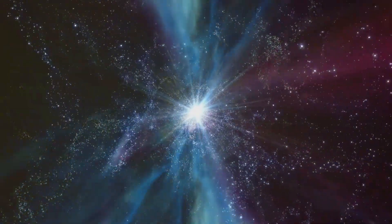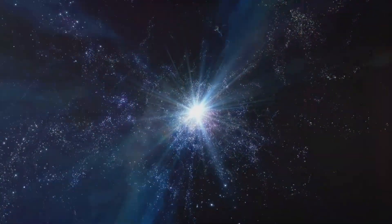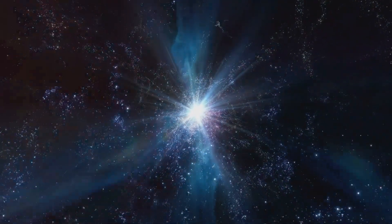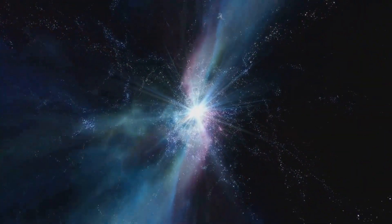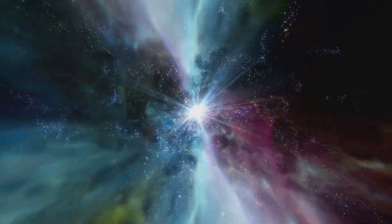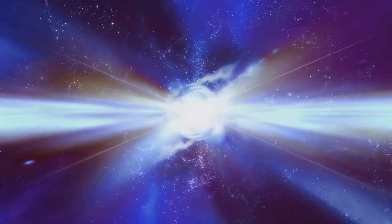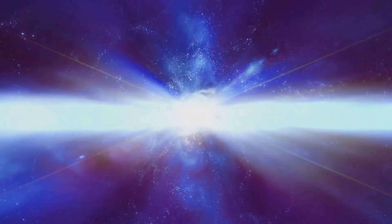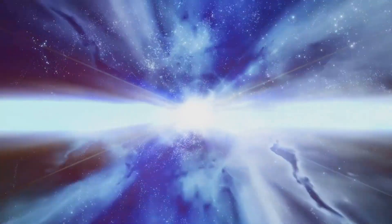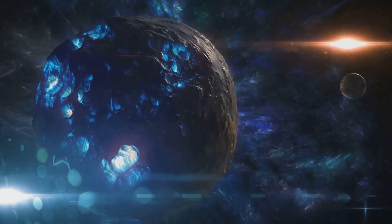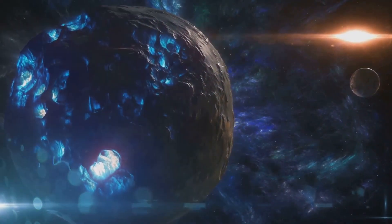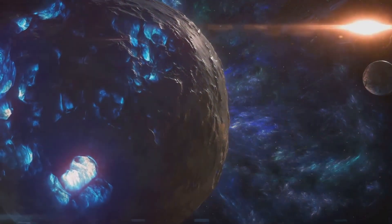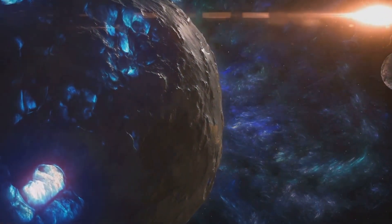But the story didn't end there. Stars are cosmic factories, forging heavier elements in their cores through cycles of nuclear fusion. These elements are the building blocks of planets and life as we know it. When massive stars exhaust their nuclear fuel, they end their lives in spectacular supernova explosions, scattering these elements into space. From the debris surrounding young stars, planets began to form, setting the stage for the birth of solar systems.